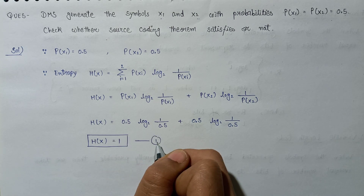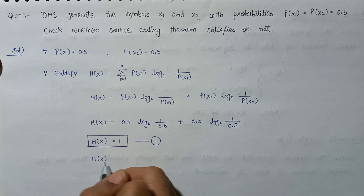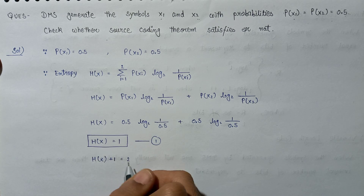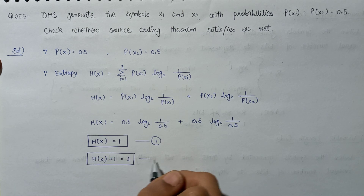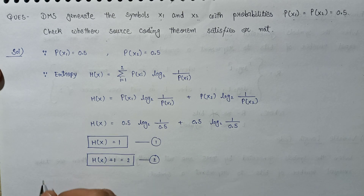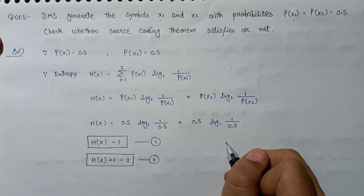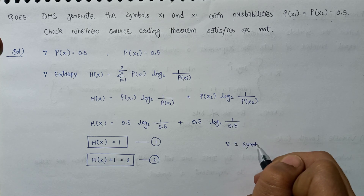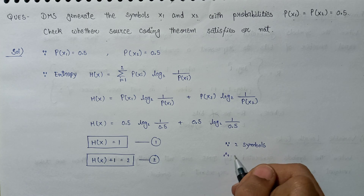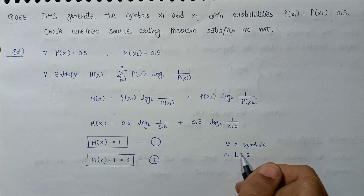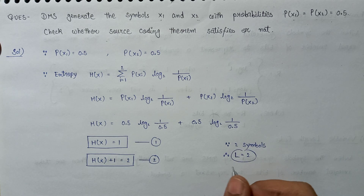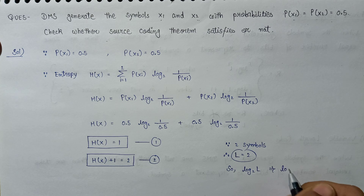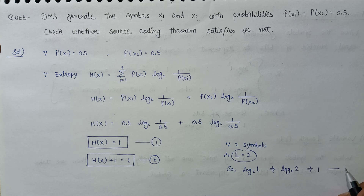Similarly, H(x) + 1 = 2, which is equation 2. Since there are two symbols x1 and x2, the average codeword length L = 2. Therefore, log base 2 of L = log base 2 of 2 = 1. This is equation 3.